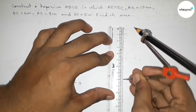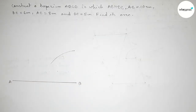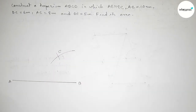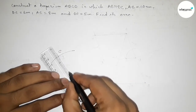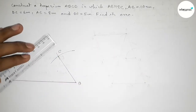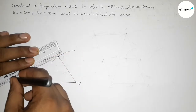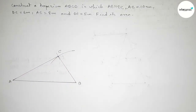By using scale and compass, taking 8 centimeter and putting the compass on point A and cutting here so they intersect. Taking point C now, joining B and C, then joining A and C.